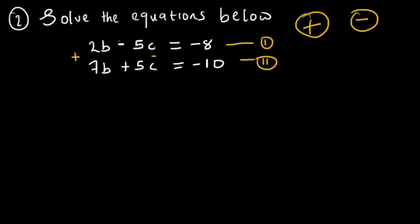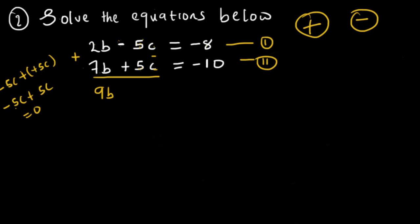Can we add these? If we add, we have 2b plus 7b, which gives 9b. For c: minus 5c plus plus 5c — minus times plus is plus — so minus 5c plus 5c equals 0. That's why we are adding, not subtracting. If we had subtracted, we'd have minus 5c minus plus 5c, giving minus 5c minus 5c, which is minus 10c — we wouldn't have eliminated anything. That's why we add when we have different signs, not subtract.